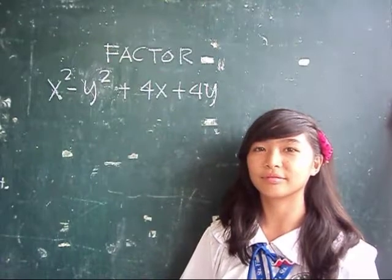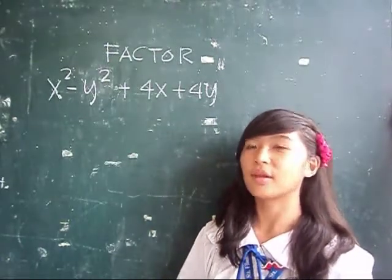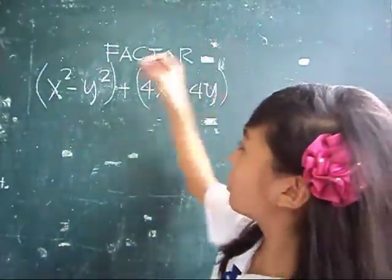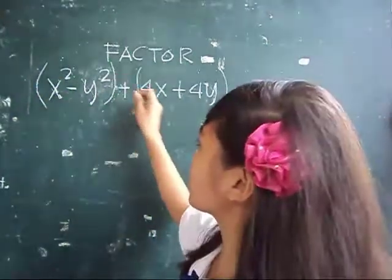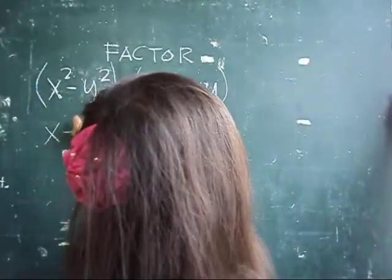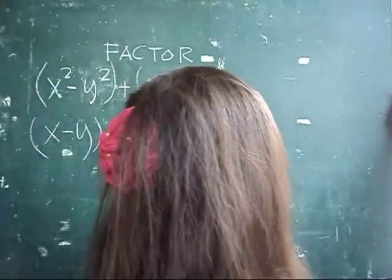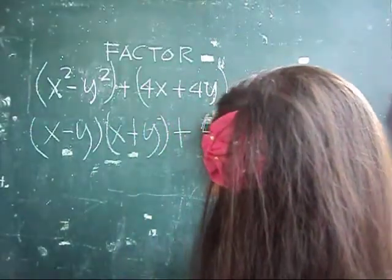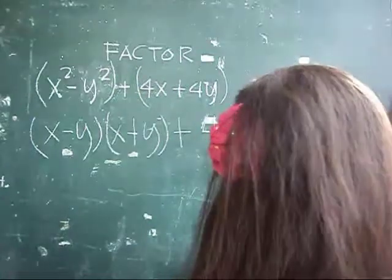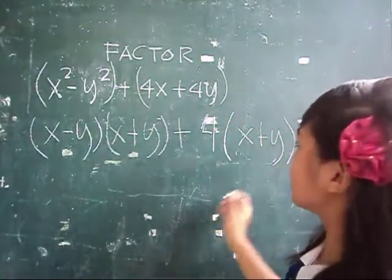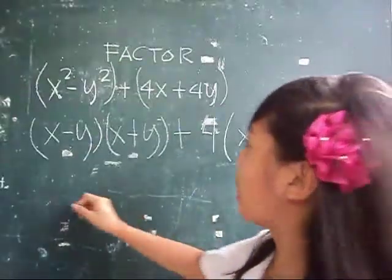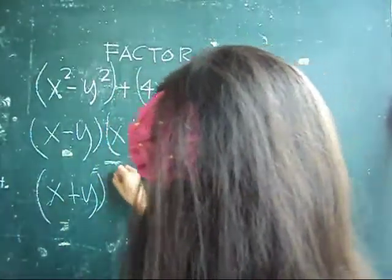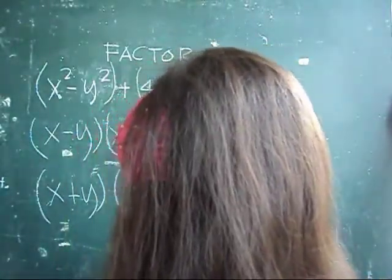Factor x squared minus y squared plus 4x plus 4y. Factor this by grouping. The factors of x squared minus y squared are x minus y and x plus y. The other factor is x plus 4 and x plus y. Since x plus y is common, factor out x plus y. The other factor is x minus y plus 4.